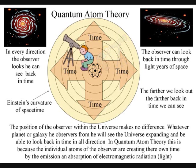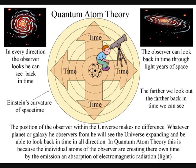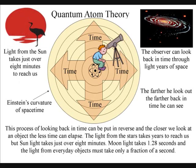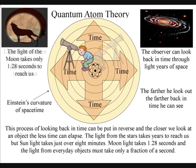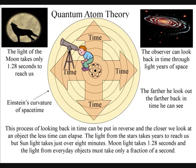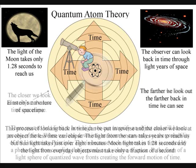The position of the observer within the universe makes no difference. Whatever planet or galaxy he observes from, he will see the universe expanding, and be able to look back in time, in all directions. The observer is the only true reference frame. This is because he is at the centre of his own created space-time geometry, at the centre of his own broken symmetry.